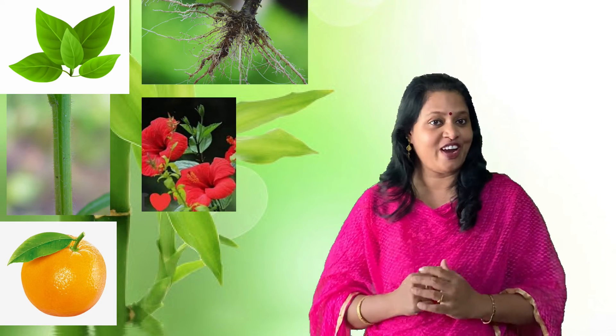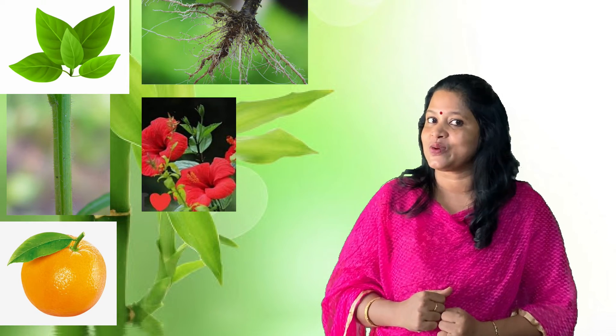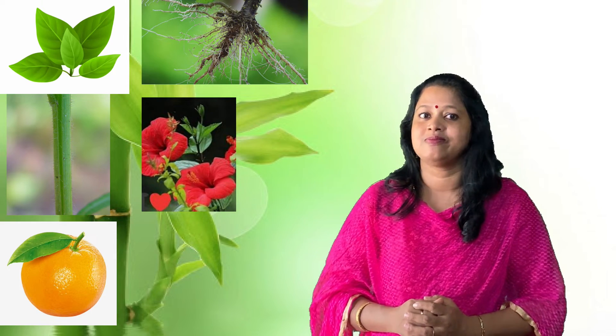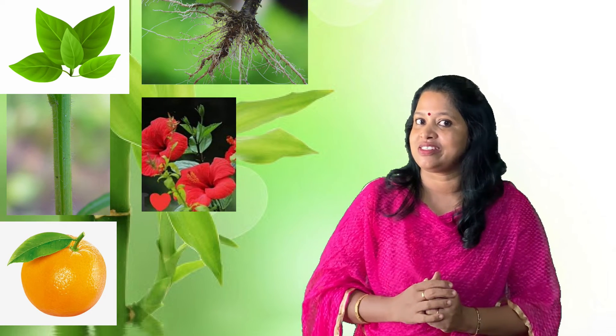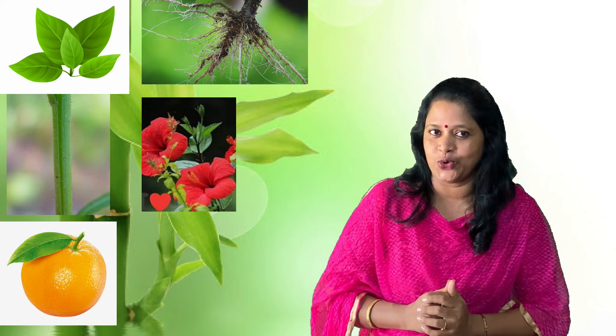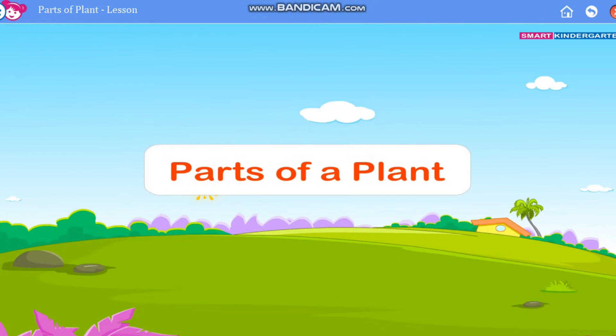Now can we say the different parts of the plant? Come on, join with me. Root. Next one — stem. Next is leaf. And what is the next part? The most beautiful one — flower. And one more — fruit. So: root, stem, leaf, flower, fruit. Very good! Parts of a plant.